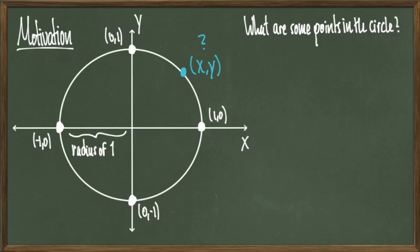We can start answering this question using some trig. What I'm going to do is inscribe this circle with a triangle. The hypotenuse of the triangle will start from the origin and end up at our point x and y. The line drawn from the origin to the point x and y has length 1 because this is a circle of radius 1. The horizontal line of this triangle will have length x and the vertical line will have length y.